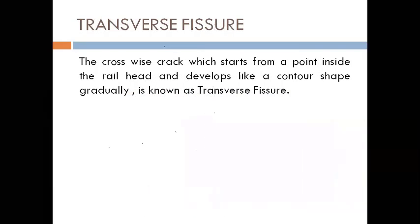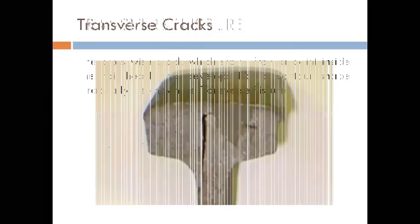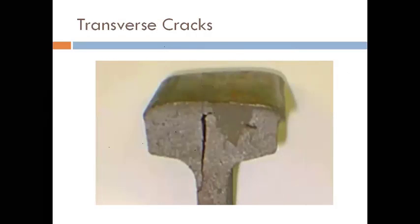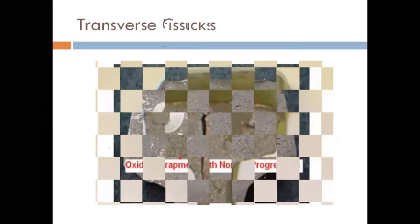Next is transverse fissure. Crosswise cracks which start from a point inside the rail and develop gradually in a contour shape are called transverse fissures. These cracks develop from inside the rail.